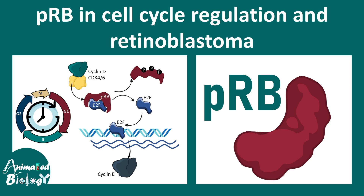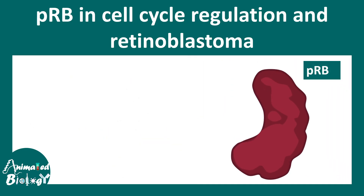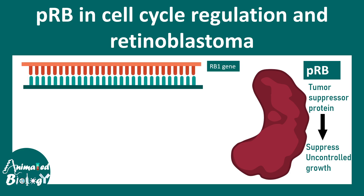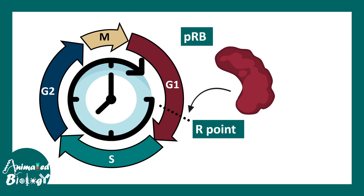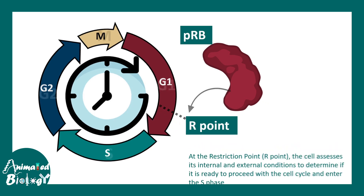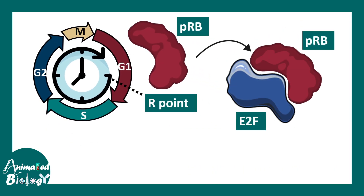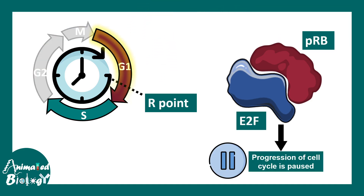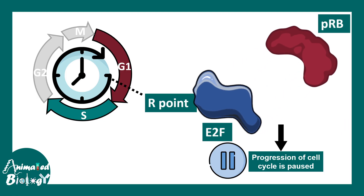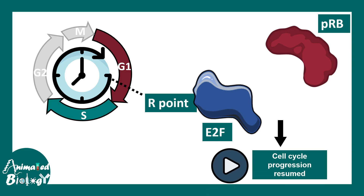Cyclin D/CDK4 activity is really important because of how it regulates pRB, a tumor suppressor protein. pRB is produced by the RB1 gene. Normally pRB sequesters a compound known as E2F, a transcription factor important for cell cycle progression to S phase. E2F can selectively bind to DNA and help produce S phase cyclins, but only when pRB releases it. So separating E2F from the pRB complex is critical.